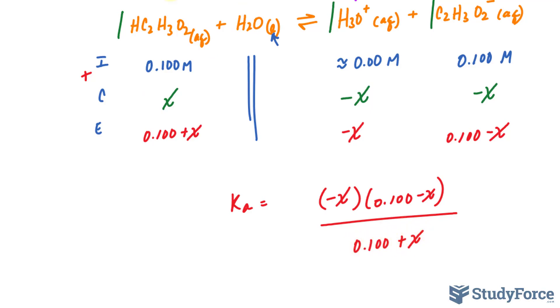Now you need to look into a table that's probably found in your textbook for the Ka constant value of acetic acid. In the textbook that I have, it is equal to 1.8 times 10 to the power of negative 5. So I'll substitute that right into there.